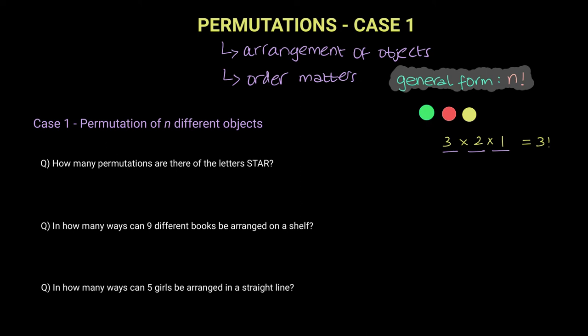Let's look at question one. It says, how many permutations are there of the letter star? So there are four different objects, and they need to find the permutations of four different letters. So all we need to do is calculate four factorial, which is 24.